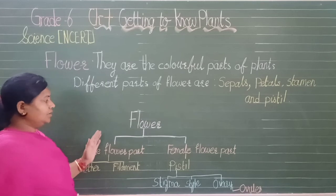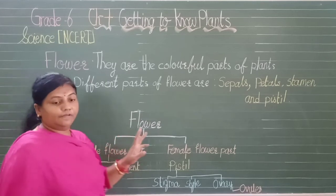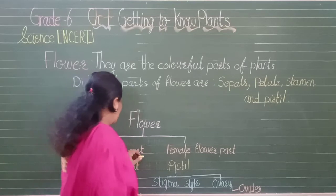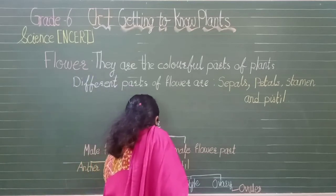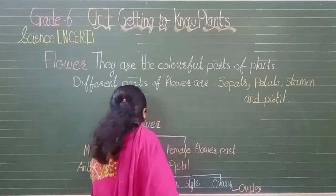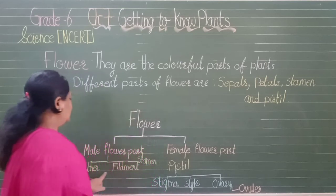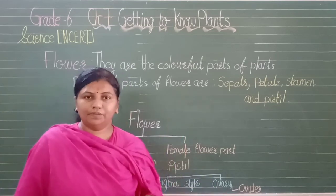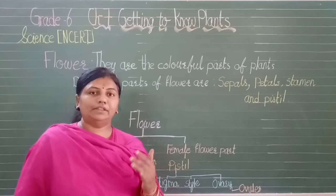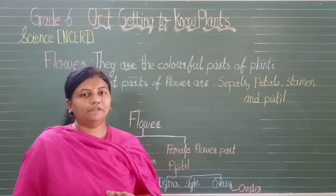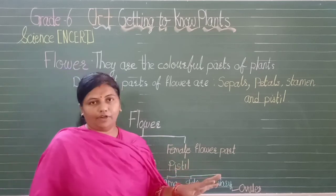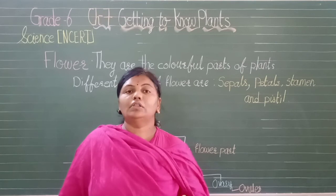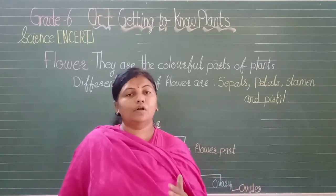For reproduction, both the male part (stamen) and the female part (pistil) are necessary. Stamen is divided into anther and filament, while pistil is divided into stigma, style and ovary. Ovary contains ovules — small bead-like structures — all of which are important in the production of the flower.